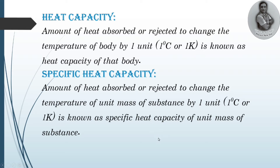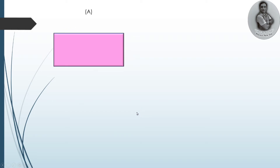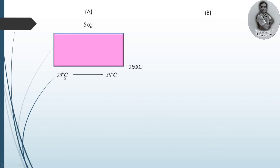Now let us understand with an example. Let us take body A, which is a metal body of five kilograms kept at room temperature, that is 25 degrees Celsius. I am going to rise the temperature by five degrees Celsius — from 25 degrees Celsius to 30 degrees Celsius. The energy needed to raise the temperature from 25 to 30 degrees Celsius is 2500 joules.